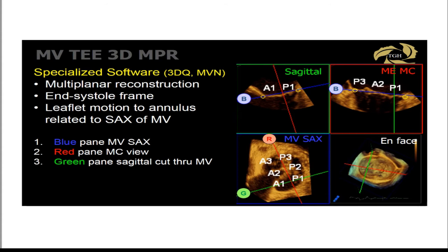For specialized software, you can use 3DQ or Mitral Valve on Phillips machines. This gives you deconstruction of your 3D volume into multi-planar reformatting. Using an end-systolic frame, you scroll through the valve to look for leaflet motion in relationship to the annulus. The blue plane represents a short axis through the valve, the red plane is often the commissural view, and the green plane represents the sagittal cut through the mitral valve.